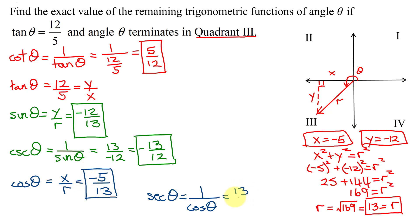Which is 13 divided by negative 5. And as we never leave a negative in the denominator, we can write this as negative 13 fifths. So that is the value of the secant of theta.